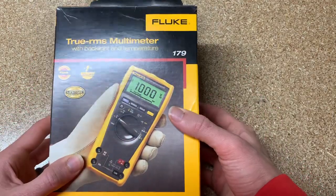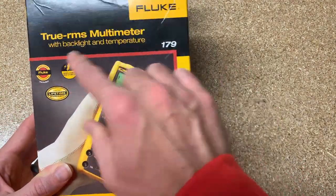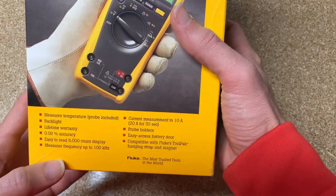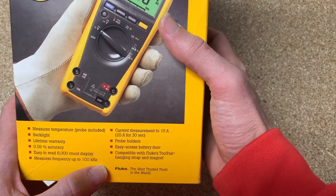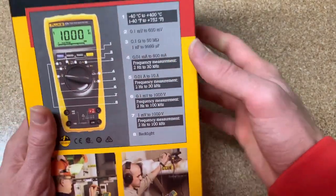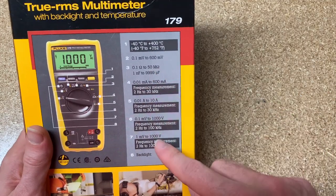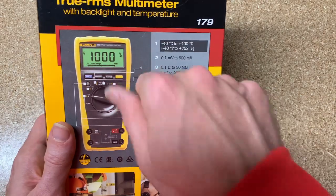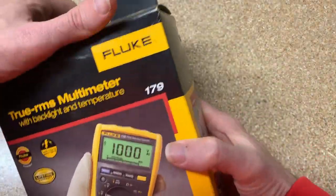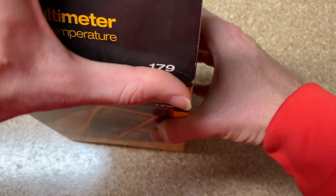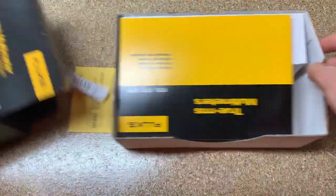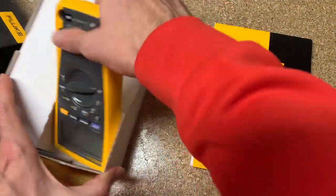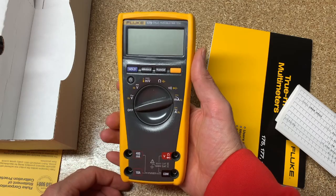So when you look at this box, you see the 179, true RMS, backlit screen, and temperature. That's what Fluke wants to tell you about it. You see limited lifetime warranty, a few other things. Then here on the back, you see all these different features and we'll try to go over that when we go around the horn with the turny dial thing. I don't know what it's called. User manuals. And here is the 179.